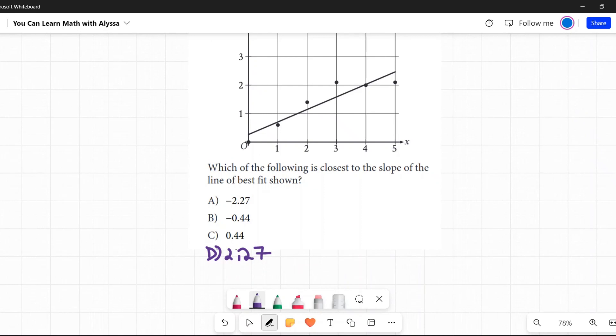They're asking for the slope of the line of best fit. So for this problem, the plots, the points of this scatter plot don't really matter. We're only looking at this line and saying what is its slope. Which of these four options is the closest?